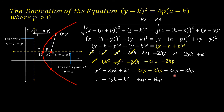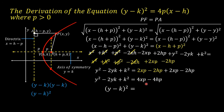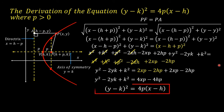The left side, y² − 2yk + k², is a perfect square trinomial. Its factors are (y − k)(y − k), written as (y − k)². The right side, 4xp − 4hp, has a common factor of 4p. Factoring out 4p gives 4p(x − h). Therefore, the final equation is (y − k)² = 4p(x − h).